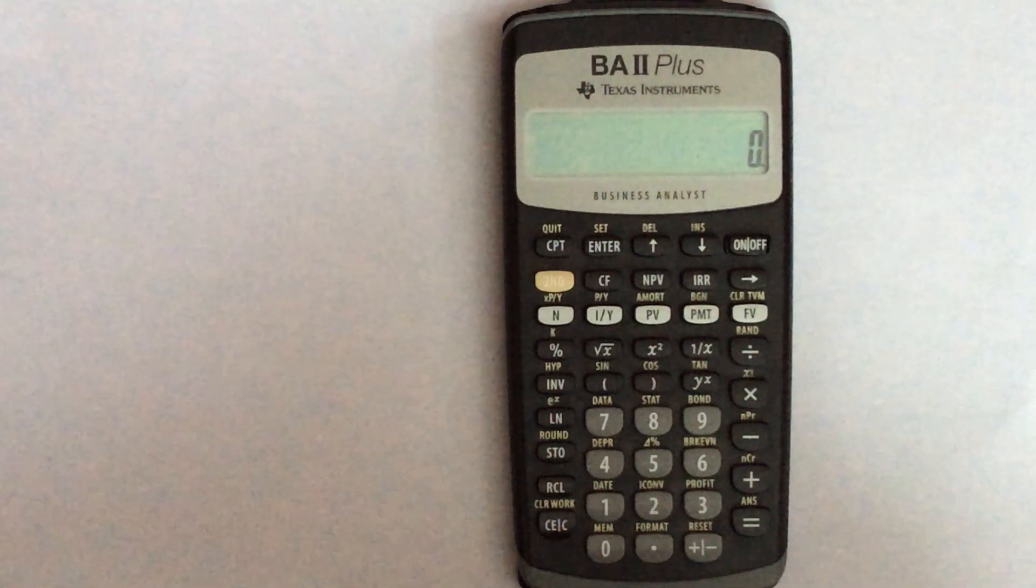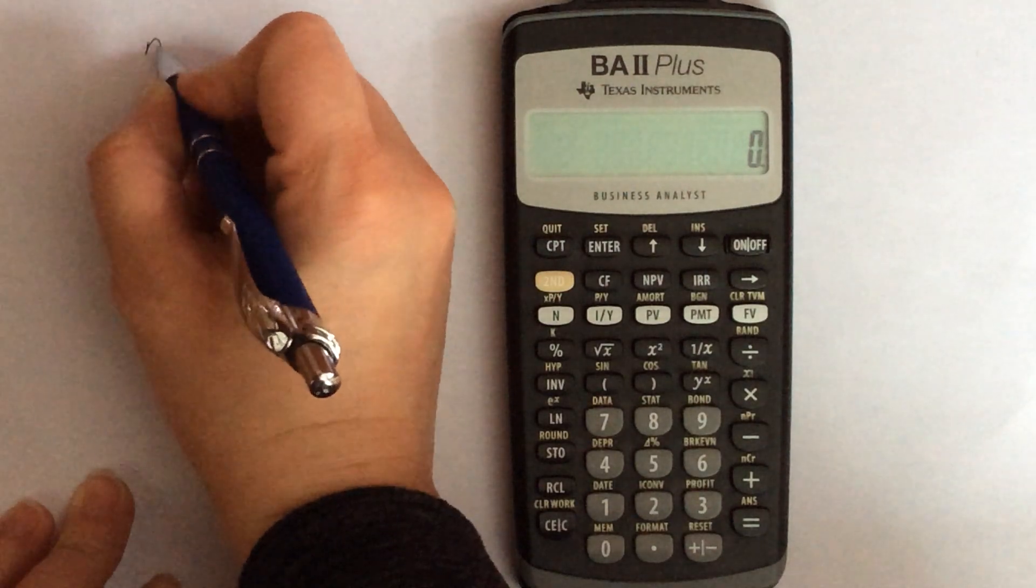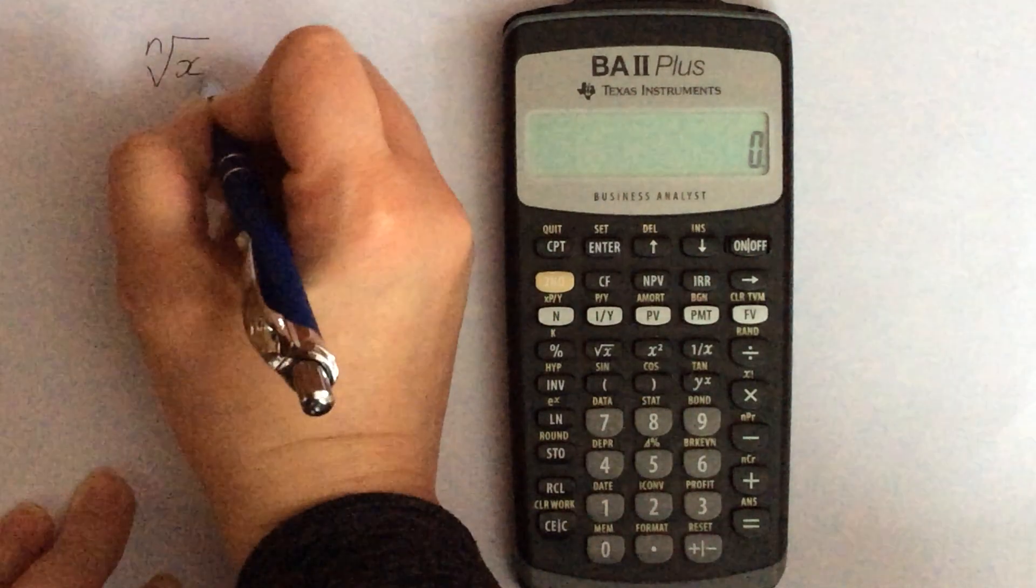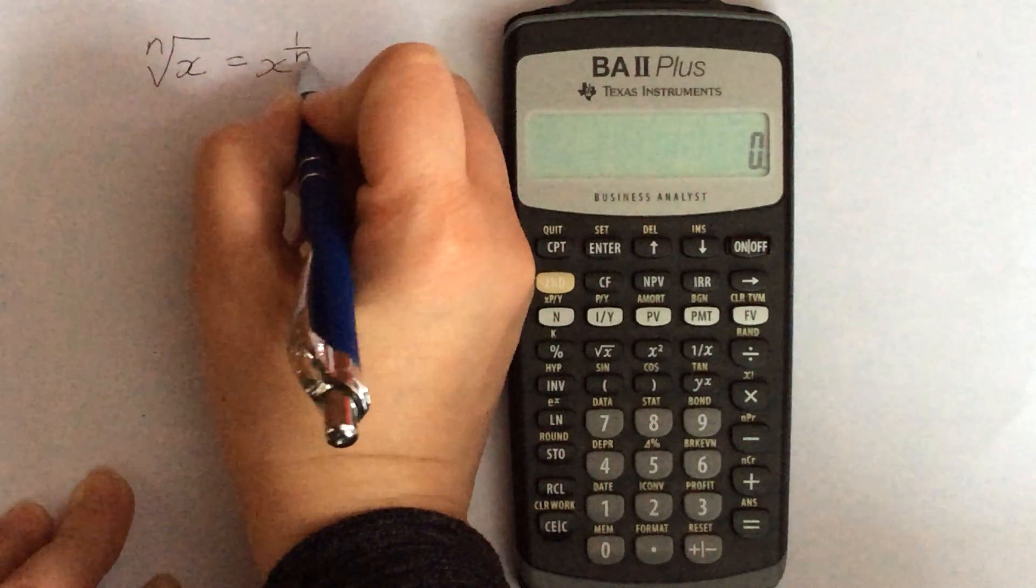So the whole basis of this is based on the nth root of x is equal to x to the power of 1 over n.